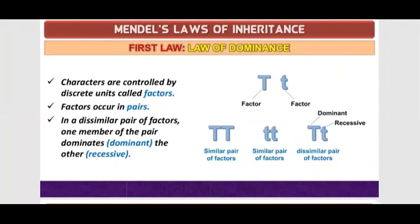This is our first law — the Law of Dominance. Characters are controlled by discrete units called factors. These are the factors. Capital T and small t are both factors — now we call them alleles or genes. Mendel gave them the name of factors. Factors occur in pairs, and the pair of genes is known as alleles.